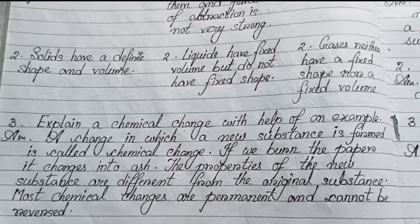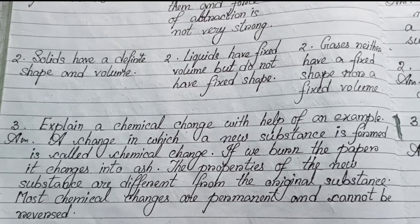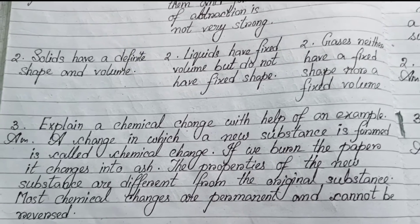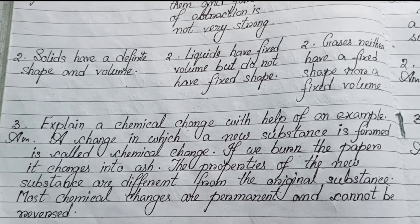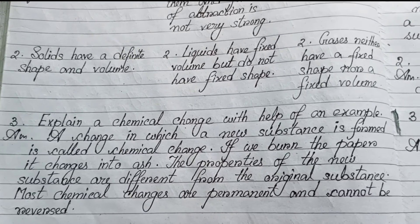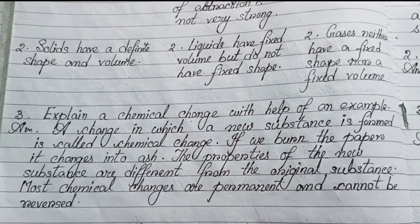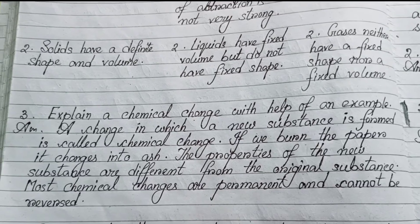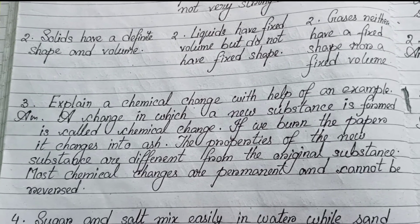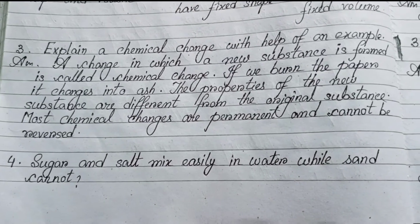Number 3: Explain chemical change with the help of an example. A change in which a new substance is formed is called a chemical change. If we burn paper, it changes into ash. The properties of the new substance are different from the original substance. Most chemical changes are permanent and cannot be reversed.